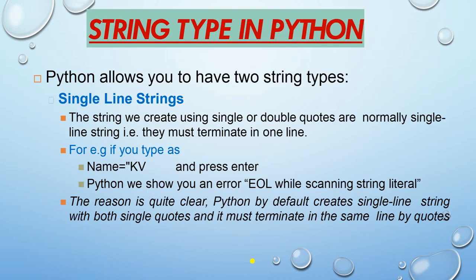Next is string types in Python. Python allows two string types: single line string and multi-line string. Strings created using single or double quotes are normally single line strings — they must terminate in one line. For example, if you write a double quote, type 'KV', forget to close the quote and press enter, Python will give you an error: 'end of line while scanning string literal'.